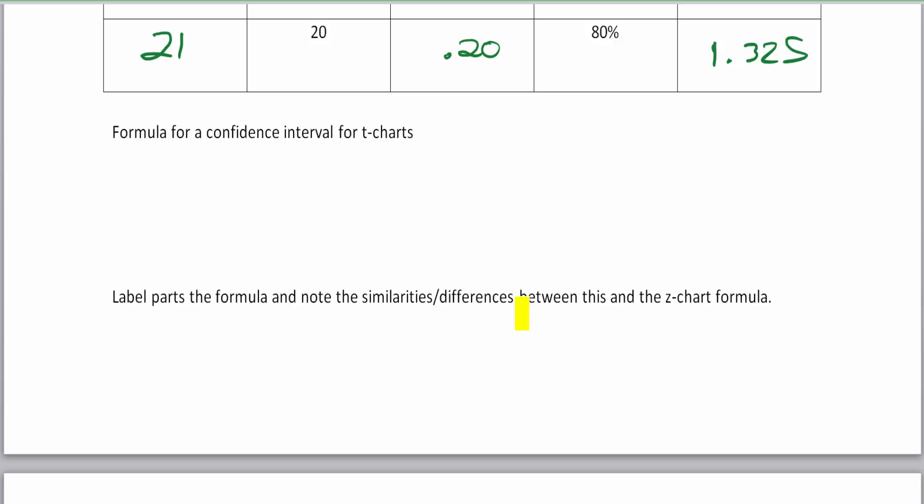Let's look at this formula for confidence interval for t-charts. What we need to do is take a look at the formula for making an interval, so this is going to be x bar plus or minus the EBM.